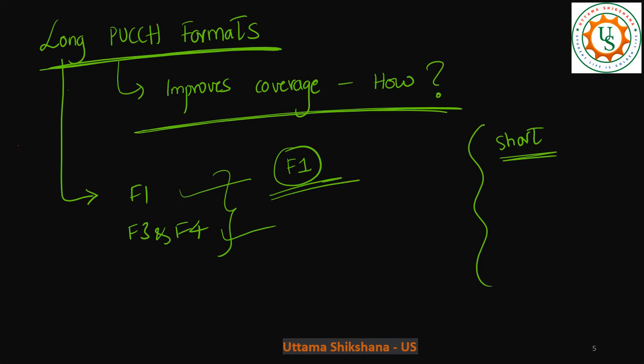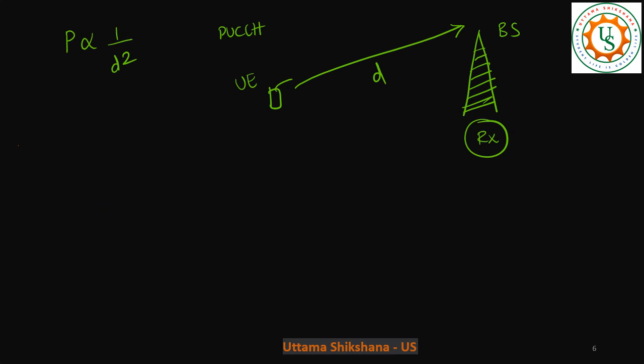Before that, I want to talk about an important basic concept, that is, power is inversely related to square of the distance. Which means, as the distance increases, power reduces. Basically, we have taken PUCCH format, right? Which means, the signal would be travelling from UE to the base station in the uplink direction.